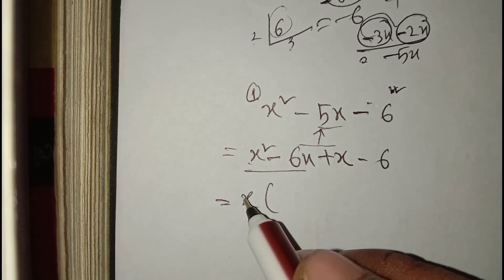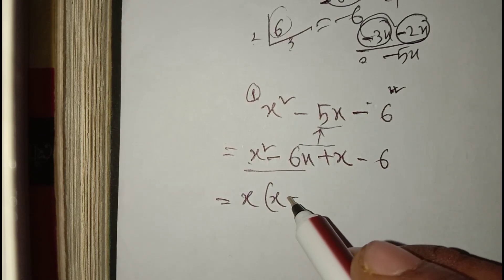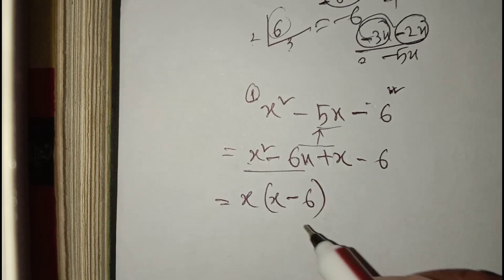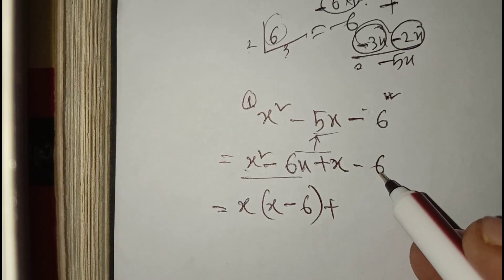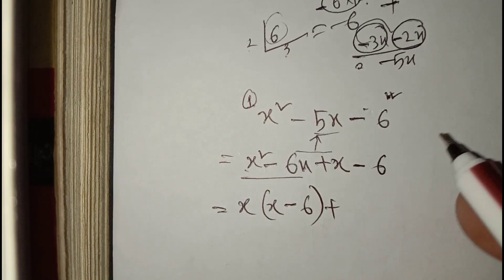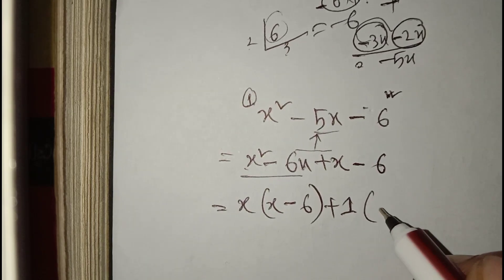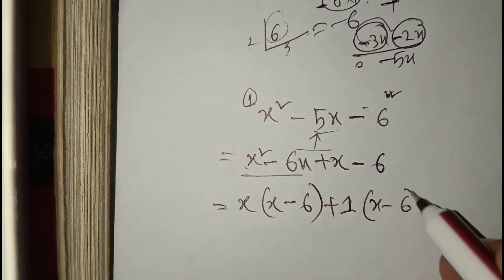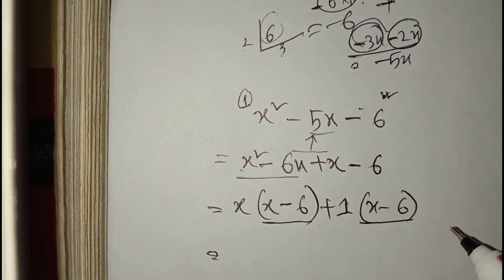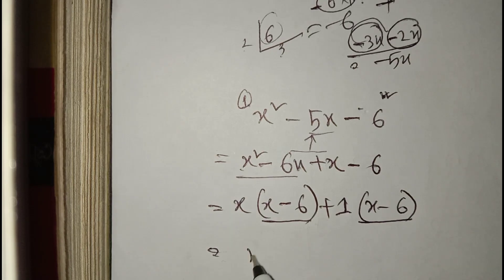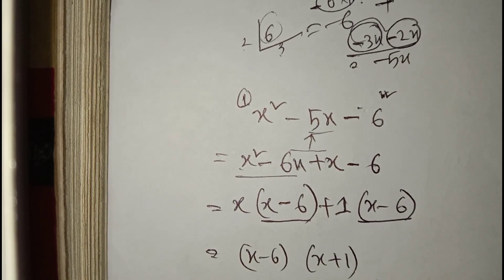Taking common factor x from x squared minus six x gives x times (x minus six), and taking common factor one from plus x minus six gives one times (x minus six). So the two factorizations are (x minus six) and (x plus one).